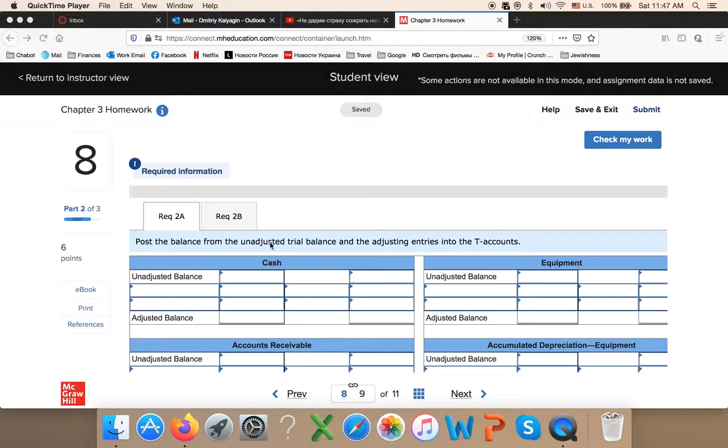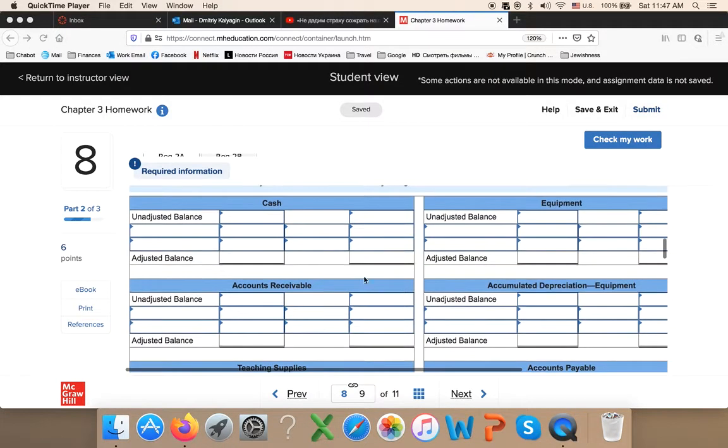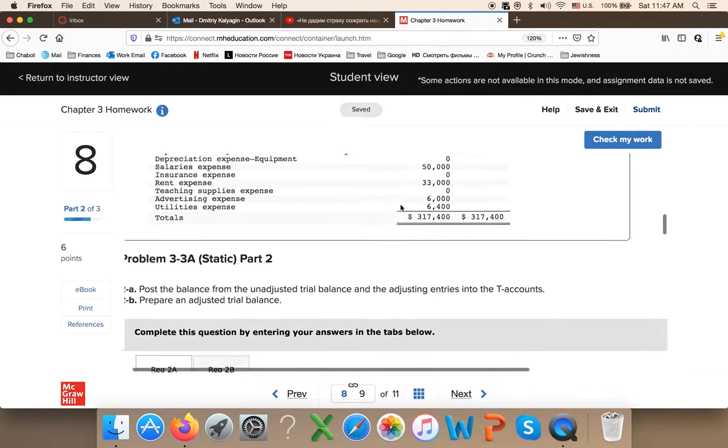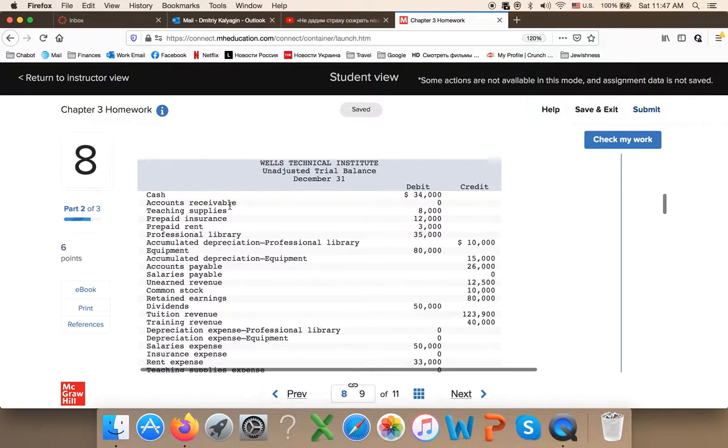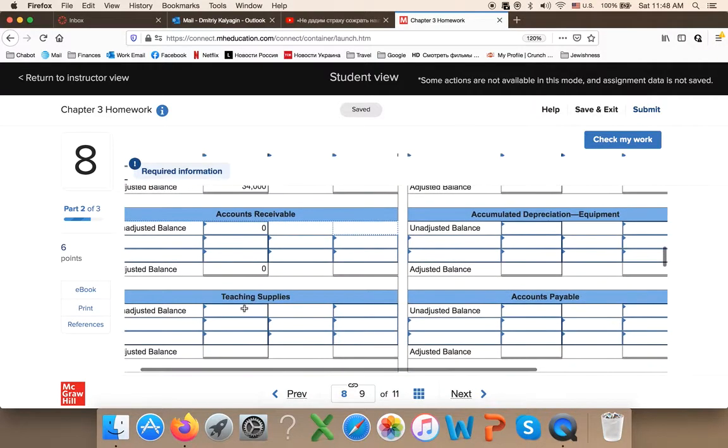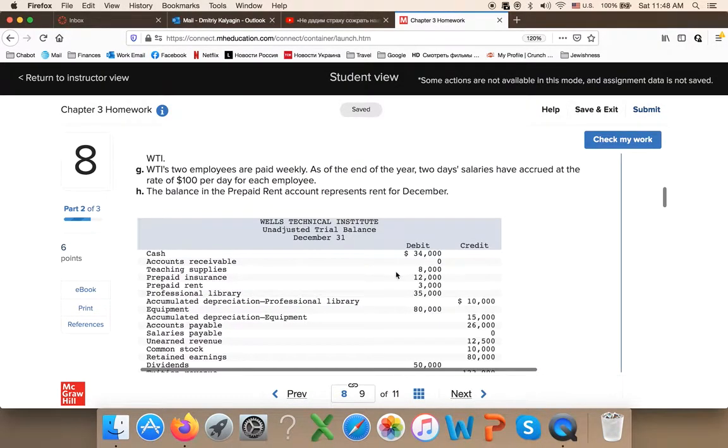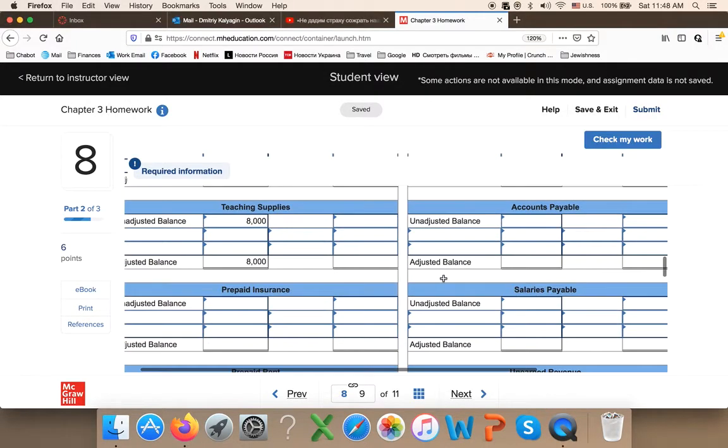So you start with an unadjusted balance, you take it from this unadjusted trial balance. Like cash is 34,000, so you put this right here. And you go through all of these accounts. You've got teaching supplies 8,000, accounts receivable zero, prepaid insurance. So you just copy unadjusted balances, balances before you entered adjusting entries in question number seven, 12,000 and so on so far.